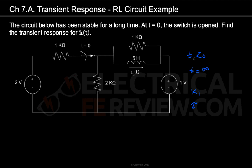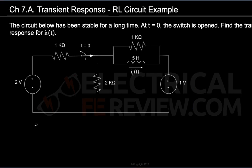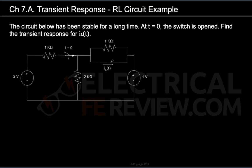At T less than 0, our system has been stable, meaning inductors turn into short circuits. Notice we also have a capacitor — it would turn into an open circuit. So at time less than 0, inductors are always short circuited. Let's replace this inductor with a short circuit. Notice that this wire will simply bypass the 1kΩ resistor, since all currents will flow through the easier path — the wire — rather than through the 1kΩ resistor. As a result, the 1kΩ resistor is bypassed.